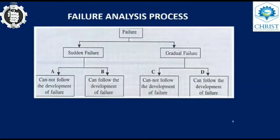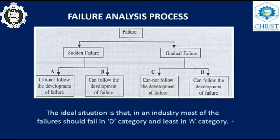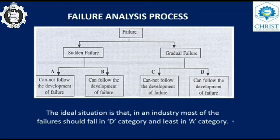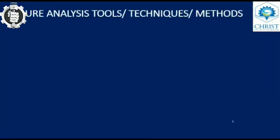A failure may be a sudden failure or a gradual failure, and both may or may not follow the development of failure. The ideal situation in an industry is that most failures fall in category D, where the failure is gradual and can follow the development of failure. In the least desirable case, category A, the failure is sudden and cannot follow the development of failure.